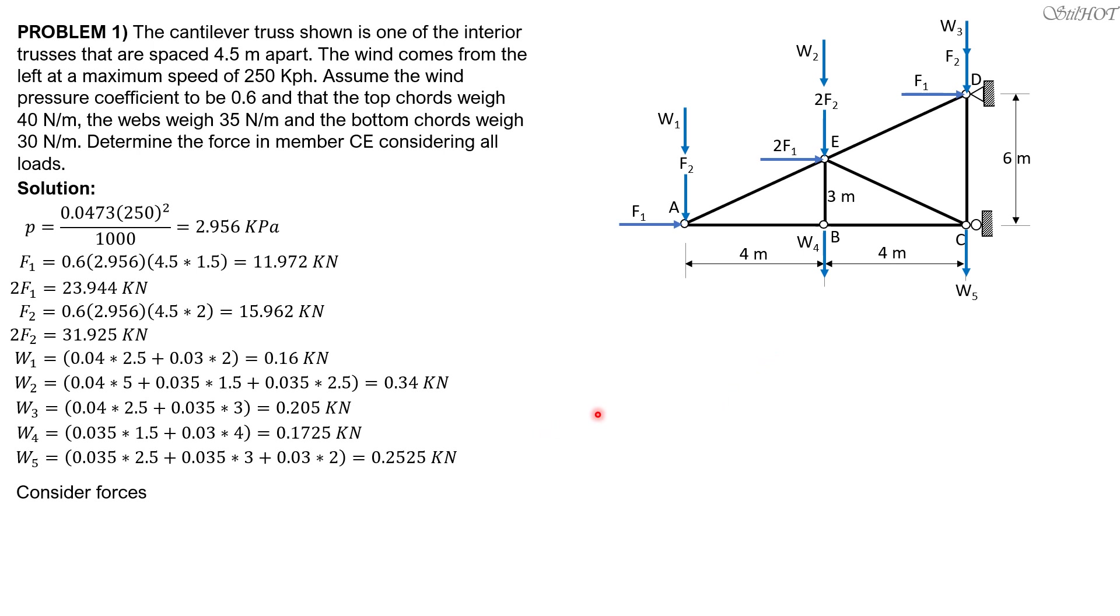Let's consider the forces left of section 1-1. The section members are 3, so the two meet at A, so we sum up moment about A. But before that, FCE is moved along its line of action at C. There are two components, the horizontal and the vertical. The horizontal component passes through A, so we don't mind. We only consider the vertical component, which is FCE times 3 over 5, because the slope is 4 horizontal, 3 vertical, 5 hypotenuse.